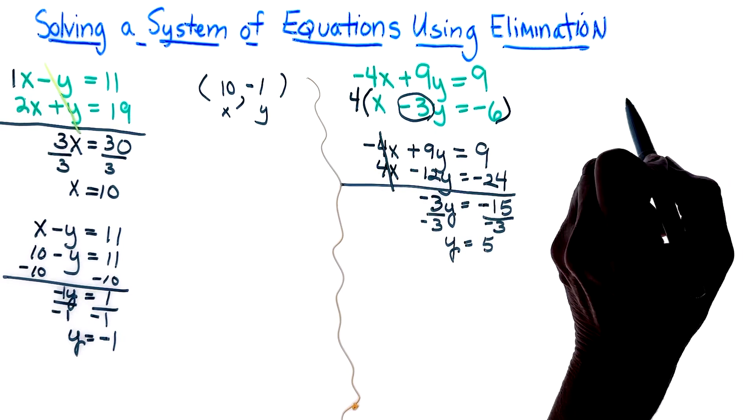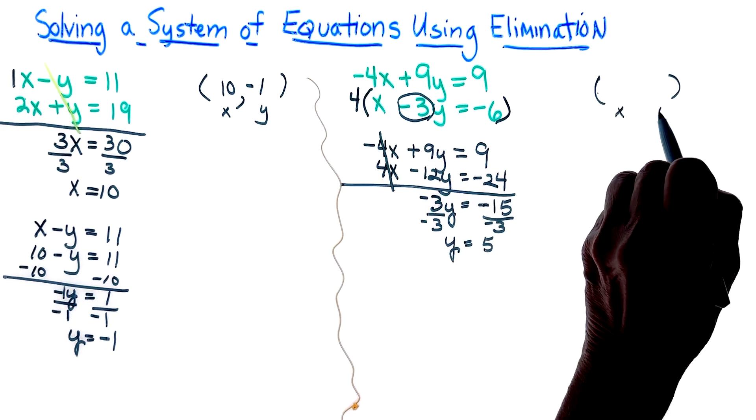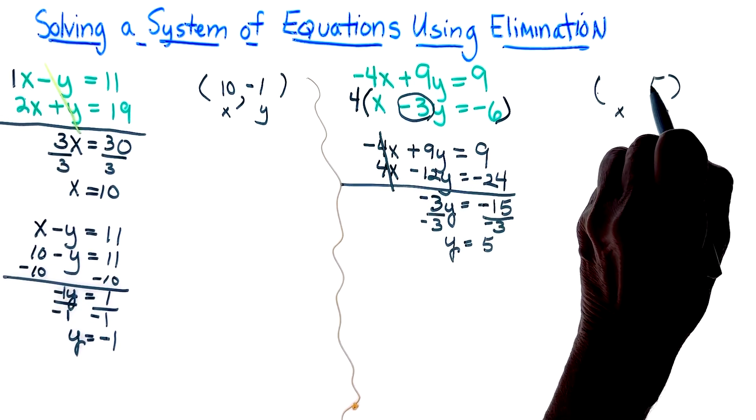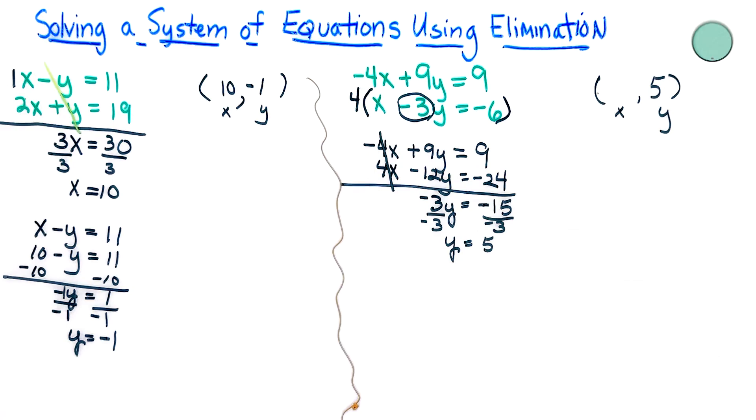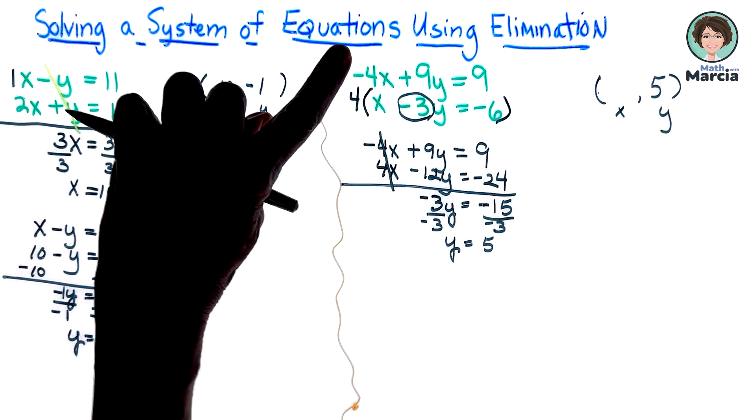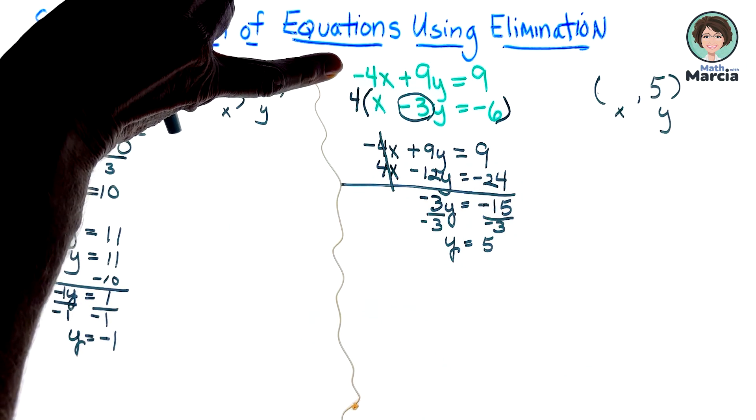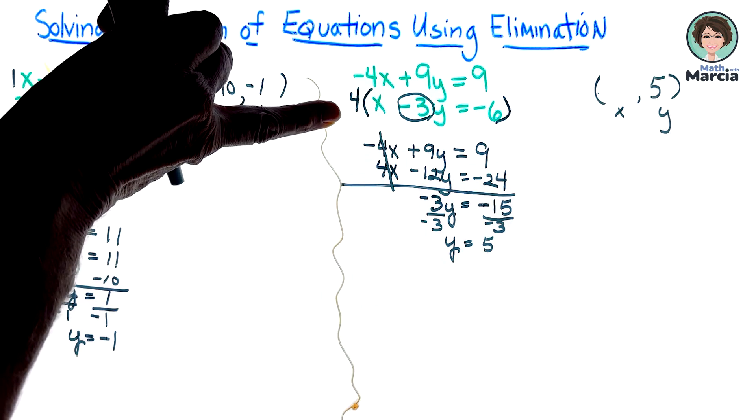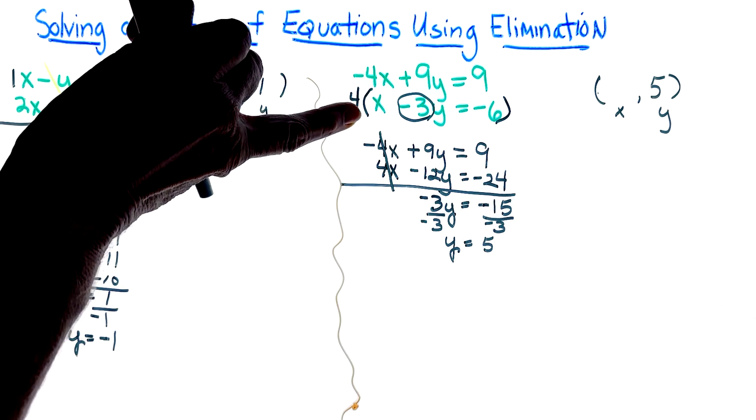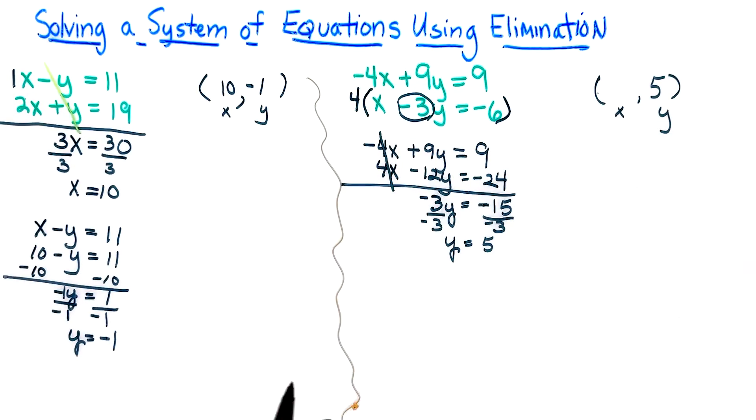Again, I'm going to start my ordered pair up here and my y is 5. So now I get to pick, do I want the first equation or the second? And you always use the original. I think I'm going to go ahead and use the second, it seems easier.